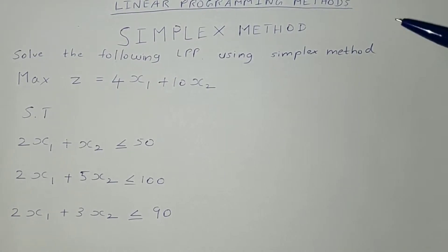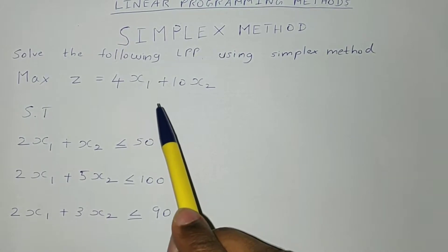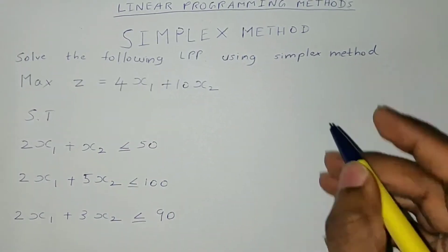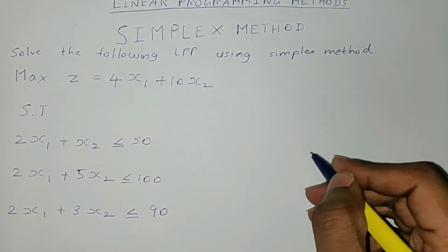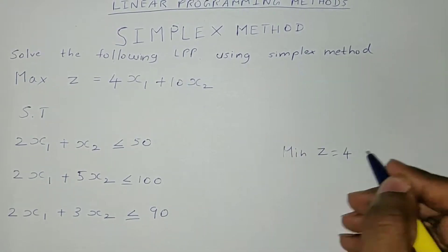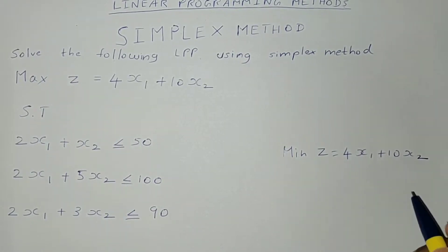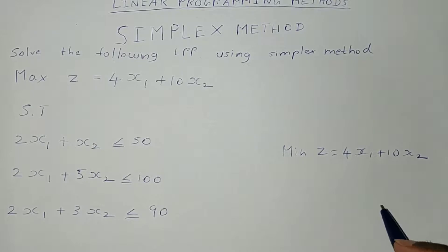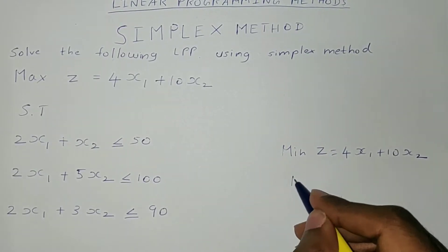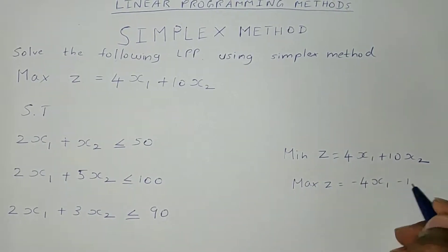First, you have to check whether the problem is given in max. In this problem, it's already given in max. Suppose if the problem is given in min — say min z is equal to 4x1 plus 10x2 — then you have to convert it to max by multiplying the whole equation by minus 1. So it will become max z is equal to minus 4x1 minus 10x2.